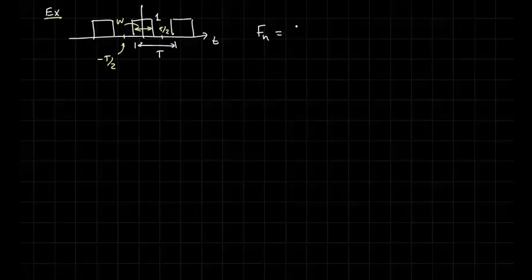So we're going to integrate from, might as well go from minus T over 2 to T over 2. We notice that when we integrate over that period, we only have a non-zero function for the width W.